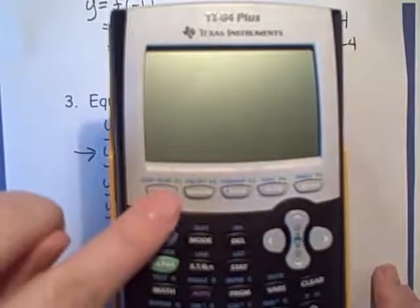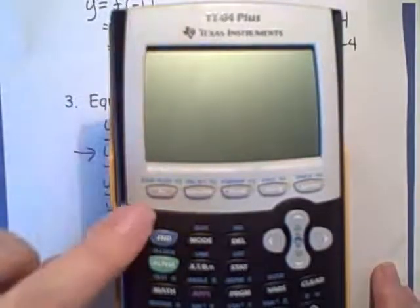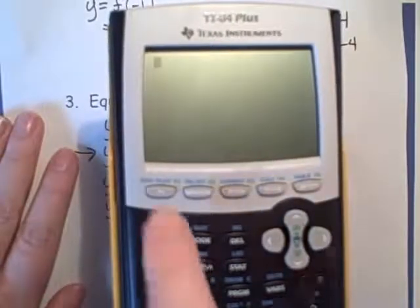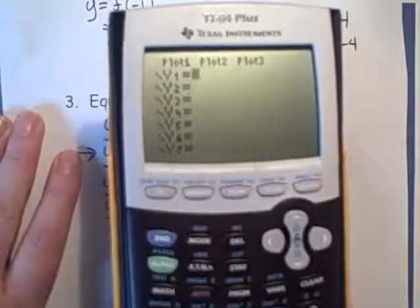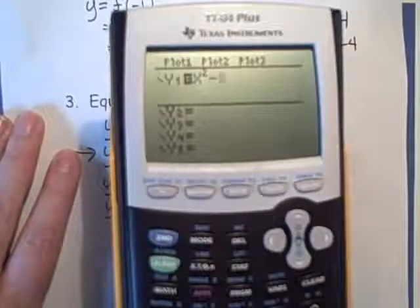I'm in my home screen right now, and what I want to do is put in my function and my equation of my tangent line. So I'm going to press y equals and put my function in. It's x squared minus 4x.